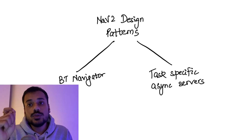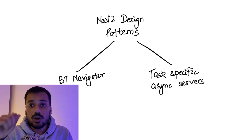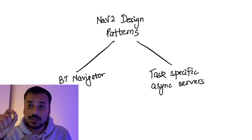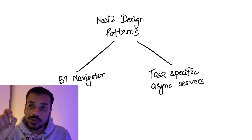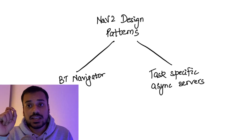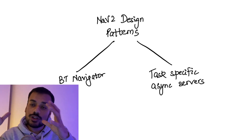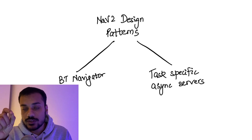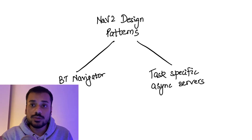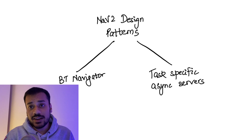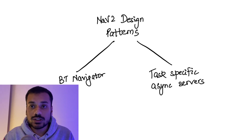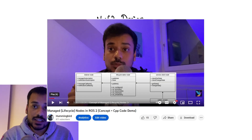These were the two pillars of the new Navigation Stack in ROS2. First, BT Navigator or Behavior Tree Navigator — this is the highest-level component and entry point, which hosts the behavior tree inside it. This behavior tree replaces the state machine. Second, task-specific asynchronous servers: for controlling, planning, and recovery, you have different modular servers. Each is a ROS2 node with an action server, and they hold multiple algorithm plugins. All these nodes are managed or lifecycle ROS2 nodes, managed by something called a lifecycle manager.